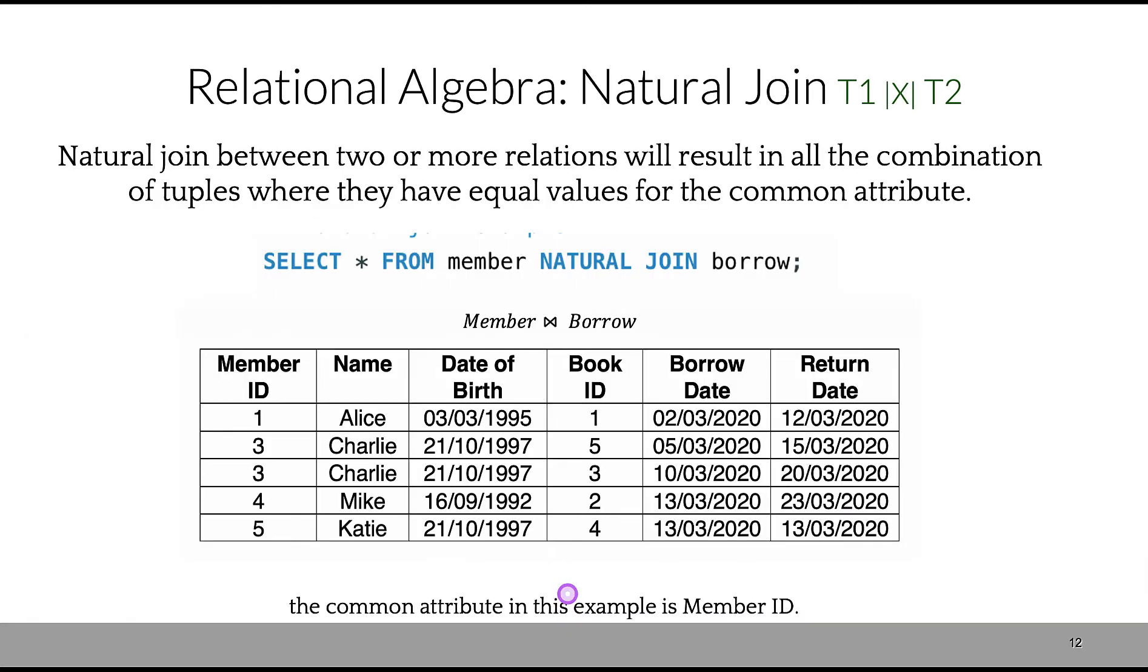Natural join is different from union. In the next slide, we'll talk about the difference between join and union in general. Natural join is between two or more relations—it's not necessarily just between two tables, it could be two or more—and it will be a combination of tuples where they have equal values for common attributes. For instance, we're selecting all attributes from 'member' and doing a natural join with the table 'borrow.' The member_id is a common attribute between these two tables. However, some other attributes are combined—they're different. If you look at the size of this table now, we have six attributes.